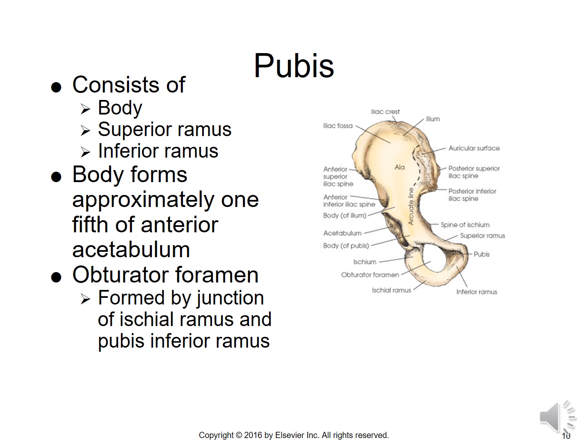Moving on to the pubis, it consists of a body, the superior ramus, and the inferior ramus. The body of the pubis forms approximately one-fifth of the anterior acetabulum. So of the acetabulum, two-fifths is the ilium, two-fifths the ischium, and one-fifth the pubis. The opening in the inferior part of the pelvis on each side is the obturator foramen, formed by the junction of the ischial ramus and the inferior ramus of the pubis.